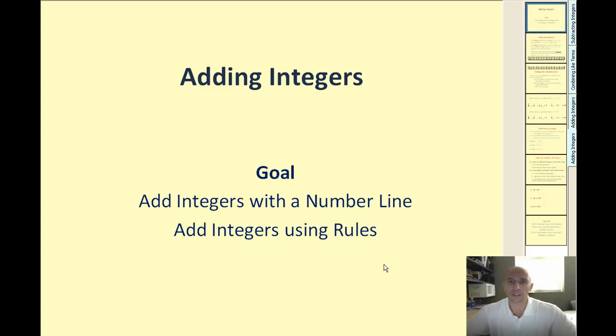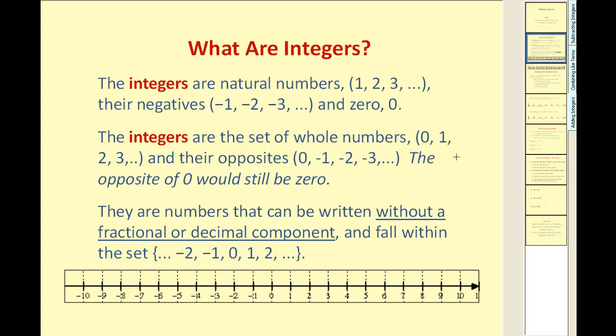Let's start off by defining integers. There's two main ways to define integers. The first way, you can say that integers are the natural numbers listed here and their negatives and zero. Or we could say integers are the set of whole numbers that include zero and their opposites. The opposite of zero would still be zero.